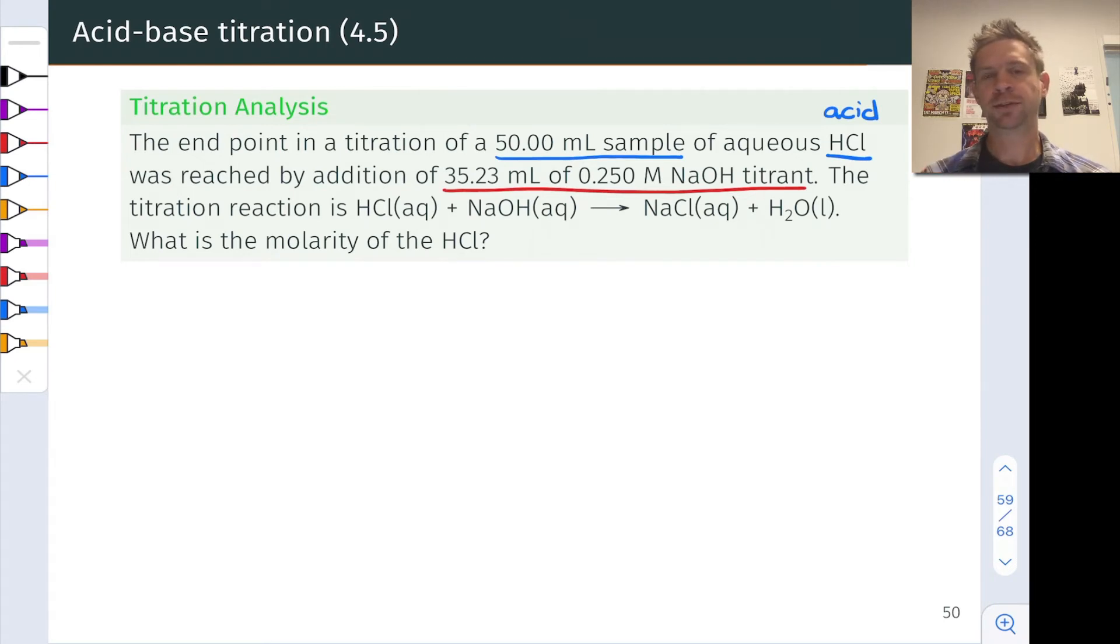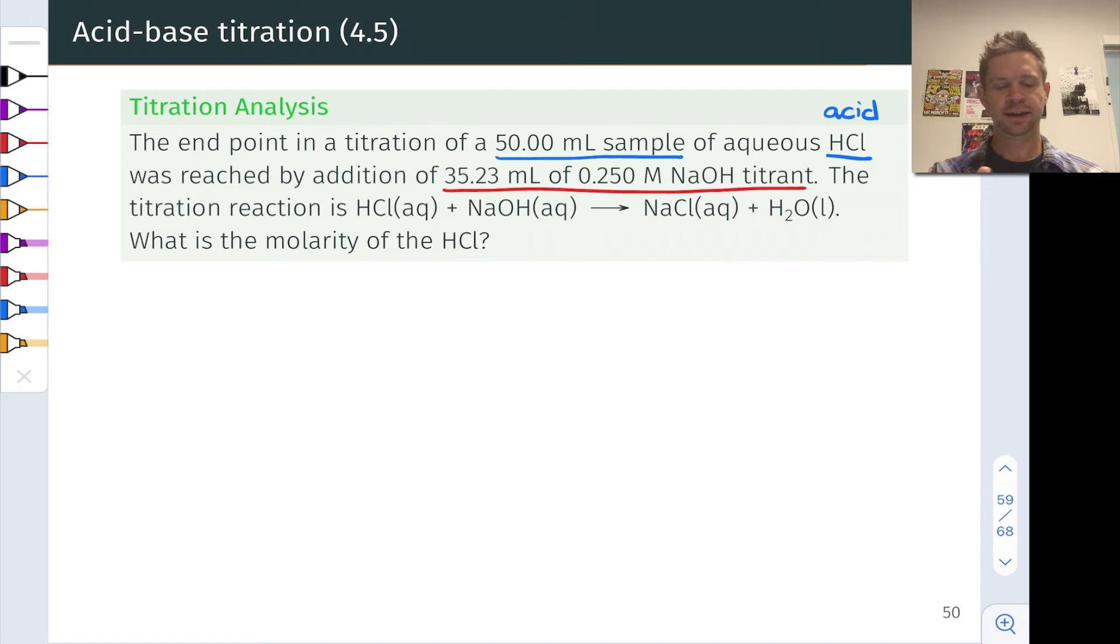Let's start by determining the known number of moles of hydroxide that were added in the course of this titration. We've got a volume of 35.23 milliliters, that's 0.03523 liters, and by multiplying by the given concentration, we can find the number of moles of hydroxide that were added in: 8.83 × 10⁻³ moles of hydroxide in this case.